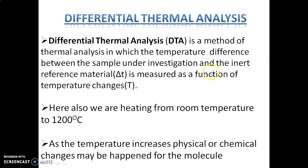Differential Thermal Analysis is a method of thermal analysis in which the temperature difference between the sample under investigation and the inert reference material, delta T, is measured as a function of temperature. In this process, the first component is the reference and the second is the sample. The reference material does not undergo any physical or chemical changes during the study.